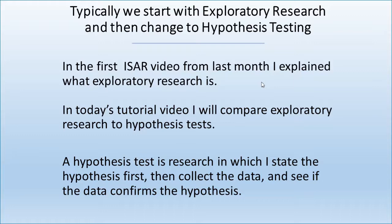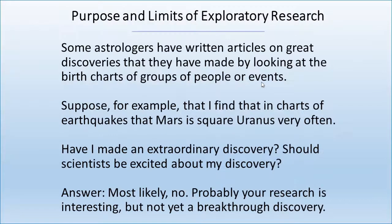So we state the hypothesis, we collect the data, and then we see if the data confirms the hypothesis. Some astrologers have written articles on great discoveries they have made by looking at groups of charts of people or events. For example, suppose you find that in the charts of earthquakes, Mars is very often square Uranus. You're seeing Mars square Uranus in the charts of earthquakes — it makes sense, it's what we expect, it sounds exciting. So you go through a lot of charts of earthquakes, and sure enough, Mars square Uranus occurs very often. Have you made an extraordinary discovery? Should scientists be excited about your discovery? Have you made a breakthrough?